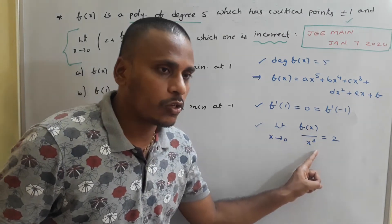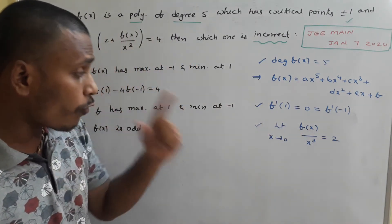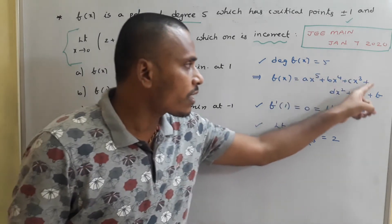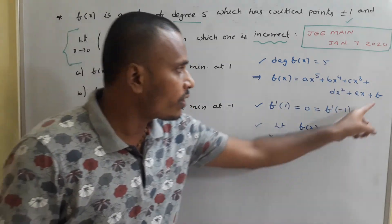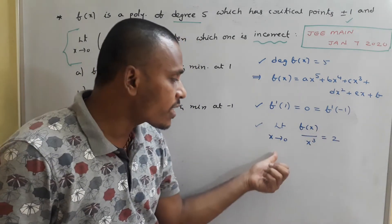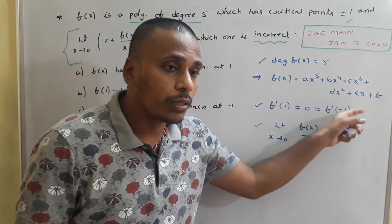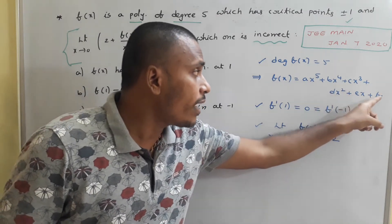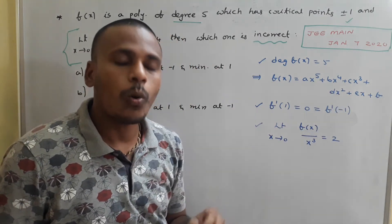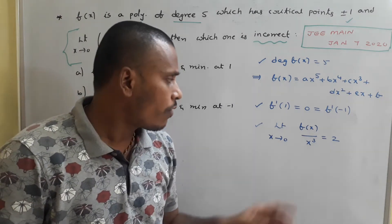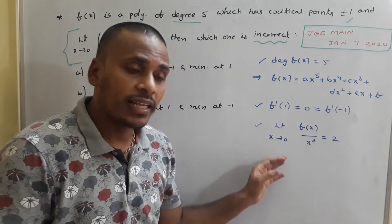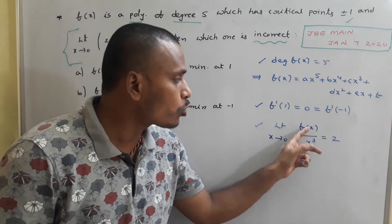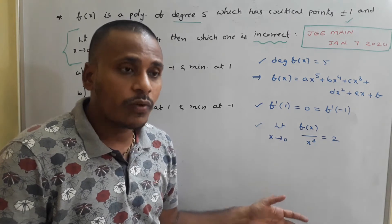Starting with the limit condition — limit as x→0 of f(x)/x³ = 2. When you divide the full polynomial by x³, terms like d/x, e/x², f/x³ tend to infinity as x→0. A limit can equal a fixed constant only if both numerator and denominator polynomials effectively match in degree — otherwise the result tends to infinity.